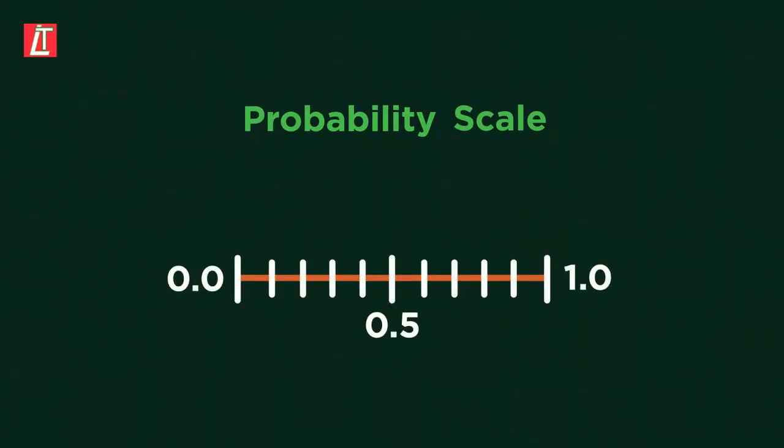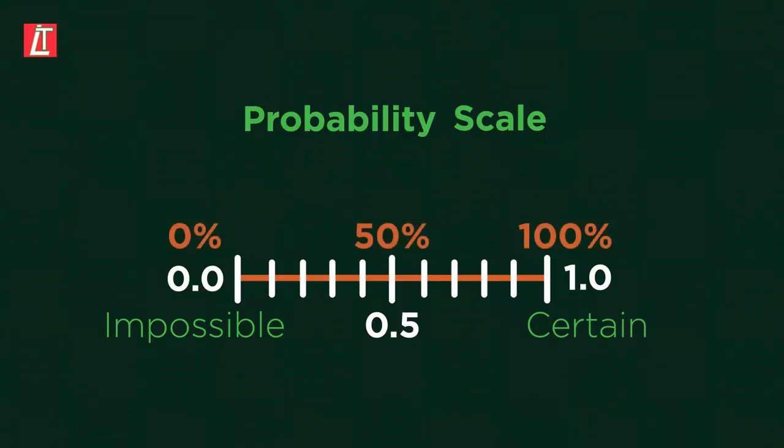If we label zero as impossible and one as certain, we can place events on a scale like this. Between zero and one, an event can be placed anywhere on the scale with a 50% chance in the middle.